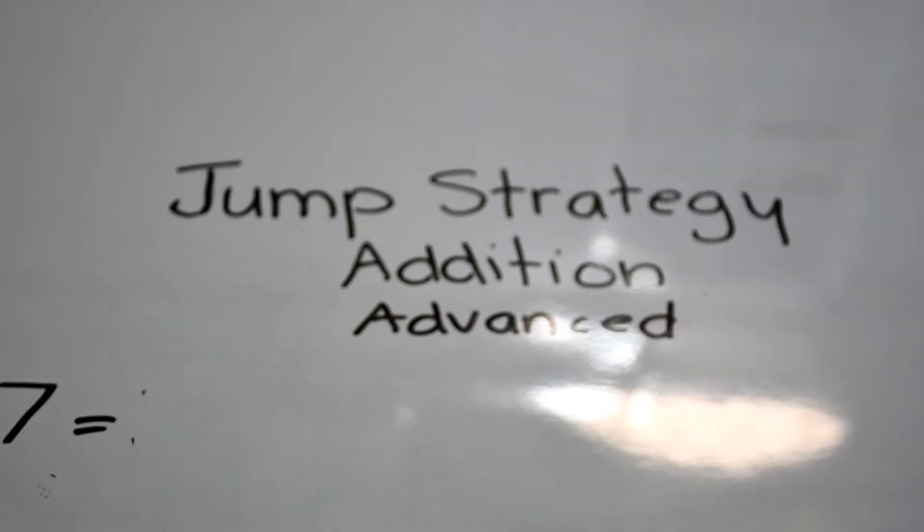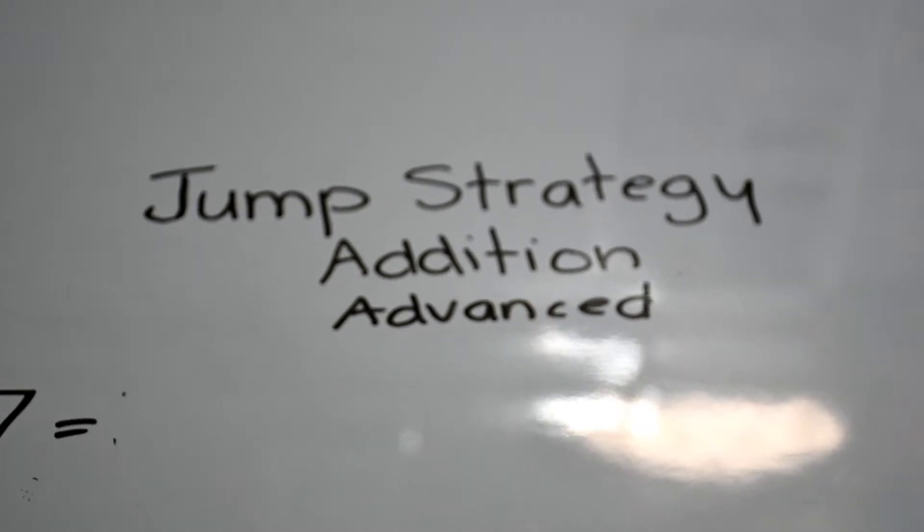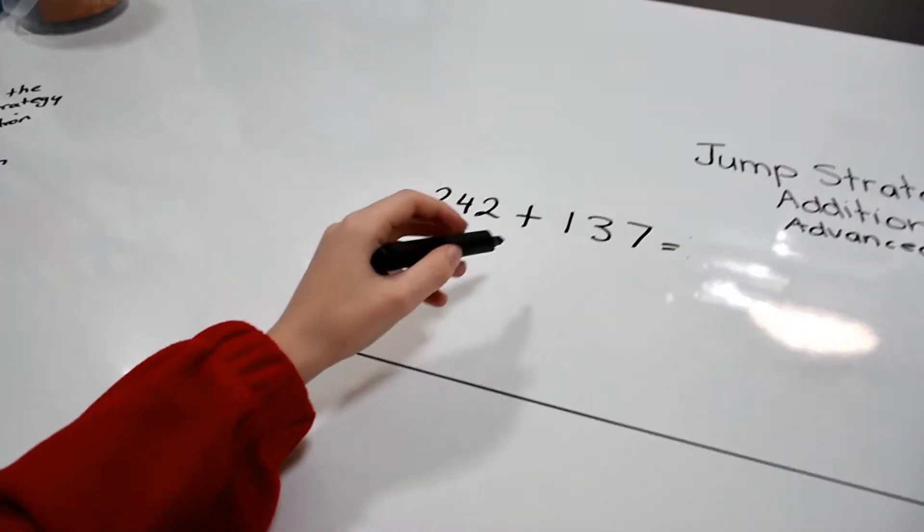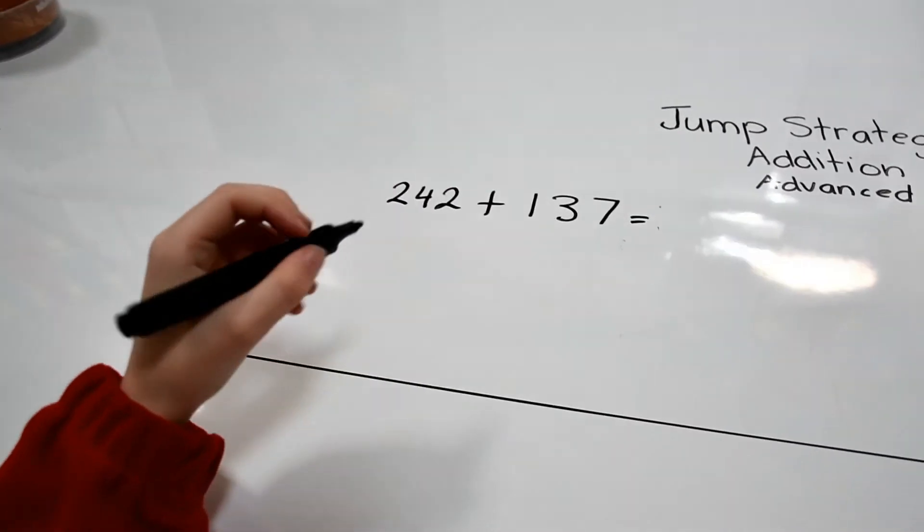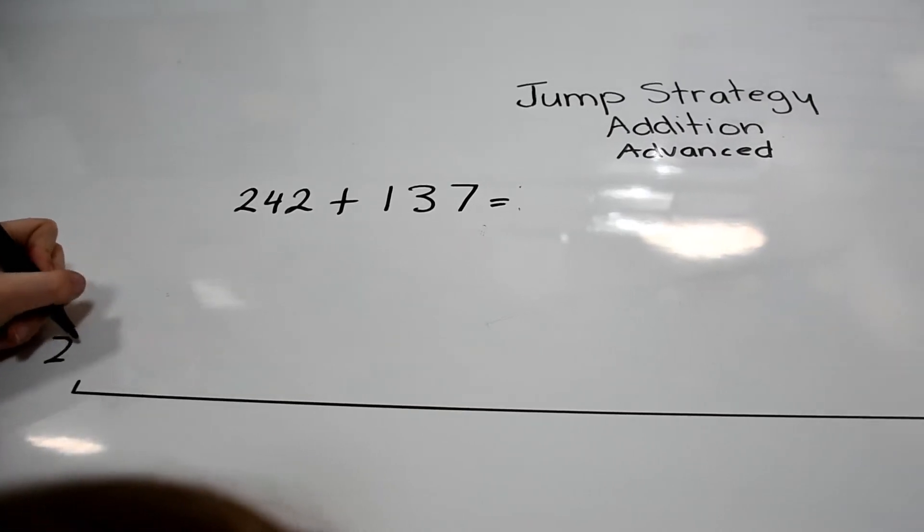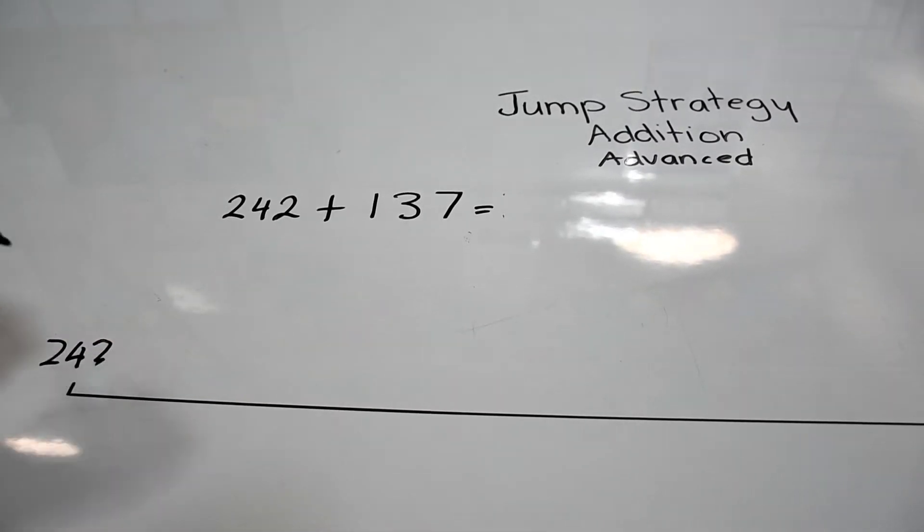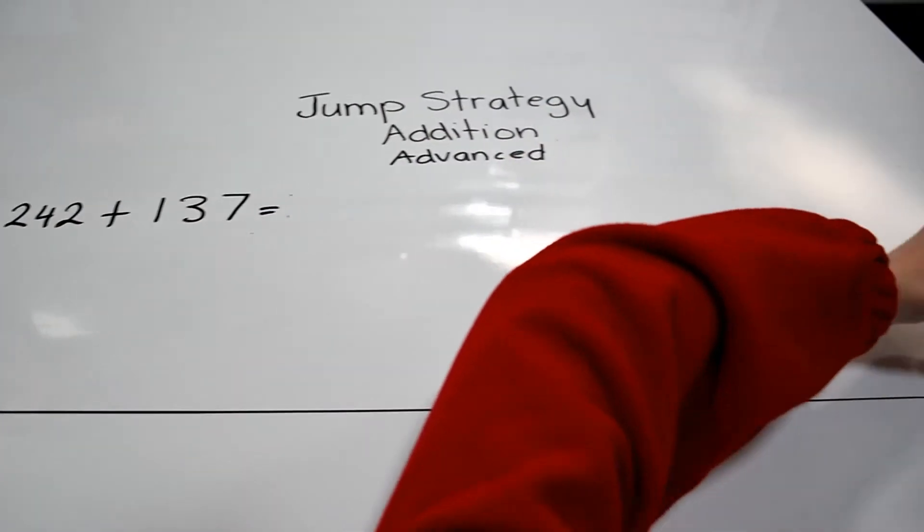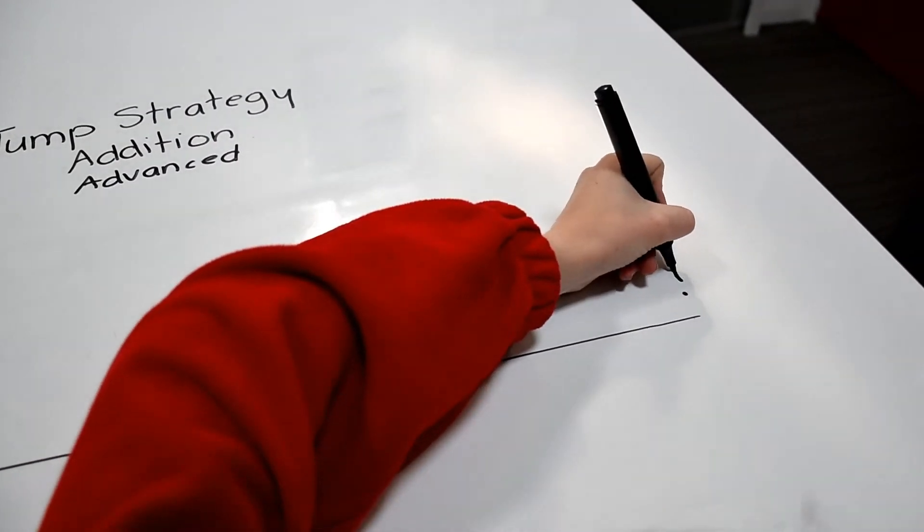This is the Advanced Jump Strategy for Addition. We're going to start off with our sum, which is 242 plus 137. For this, we'll need our number line and we'll have to start with the biggest number, 242. At the end of our number line will be our mystery number, what we're trying to find out.